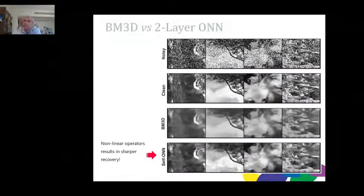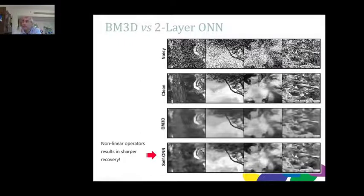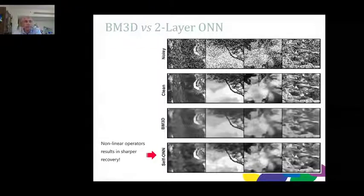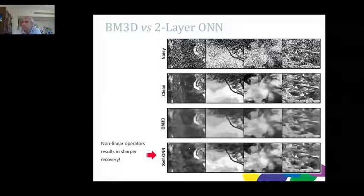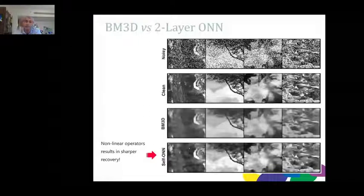At ICASSP 2021 in Alaska, we presented results on severely noisy images with additive white Gaussian noise. We compared against BM3D — a product from a leading university that became the state-of-the-art automatic denoiser for many years — and our two-layer SONN recovers edges and content much more clearly than the blurring artifacts produced by BM3D.